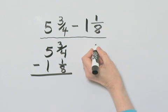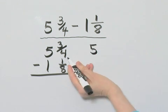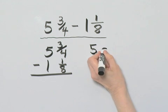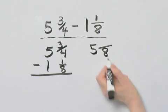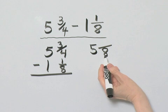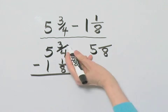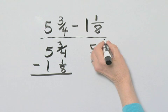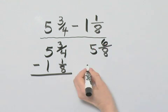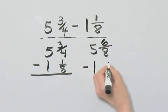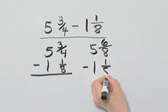So this becomes 5, and then 4 times 2 is 8. If I multiply the denominator by 2, I must multiply the numerator by 2. 3 times 2 is 6, and then I have minus 1 and 1 eighth.